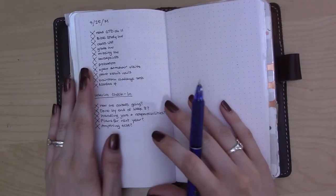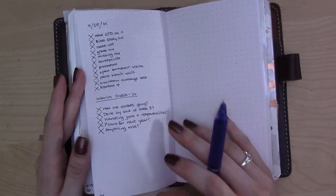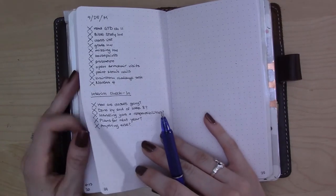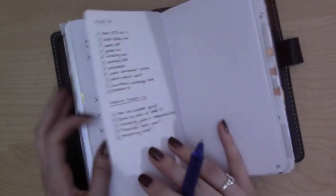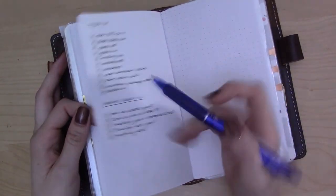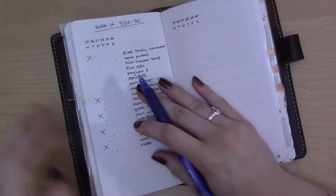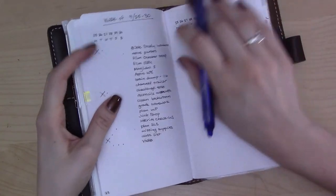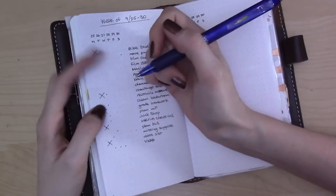Hey there, welcome back to the minimalist Bujo challenge. It is Tuesday September 26th and I pretty much killed it on Monday as you can see with all of these X's. I did a good job, I'm very proud of myself. I'm proud of myself because I put all of the easy stuff to do on Monday.